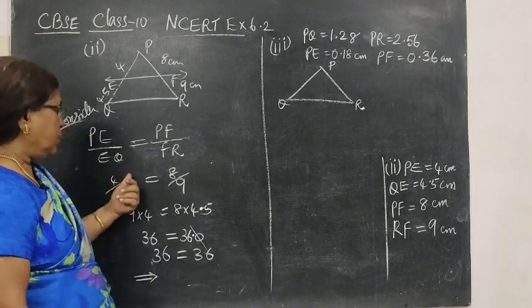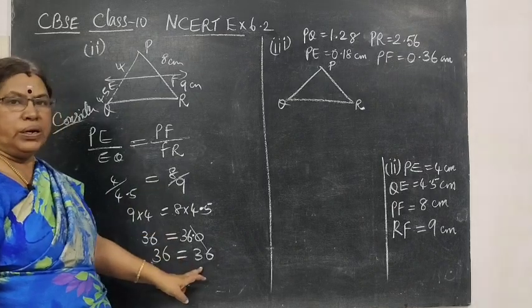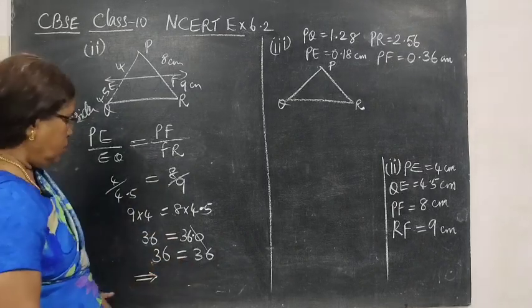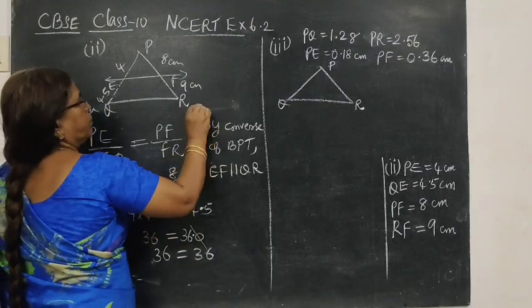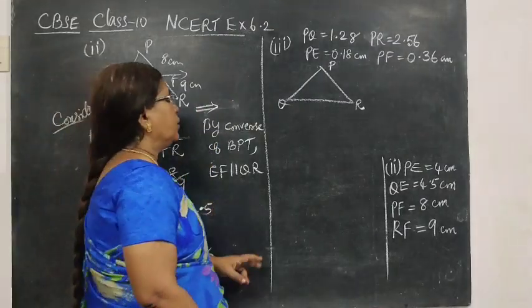Since they are equal, in two ways we can do LHS equal to RHS, or just cross multiplying numerically. They are equal. Which implies, since they are equal, they are parallel.